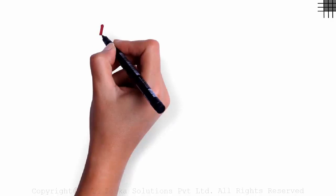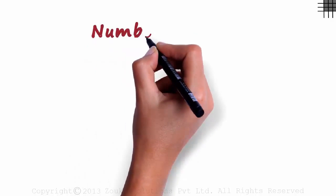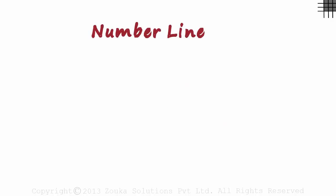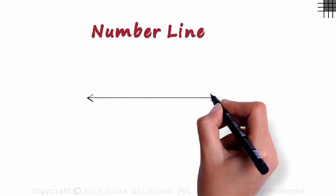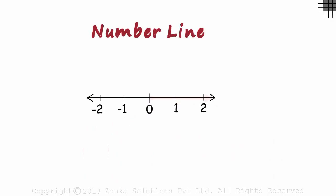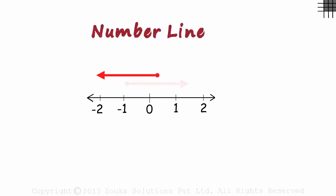How do we represent rational numbers on a number line? A number line looks something like this. The positive integers are represented towards the right of zero and the negative integers are represented to the left of zero. The numbers increase when we move towards the right and decrease when we move towards the left.